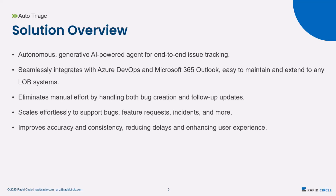This isn't just about bugs or issues. The same approach or principle can be applied for feature requests, incident management, and many other use cases in typical product ALM. The biggest impact, as you can already guess, is that it removes repetitive manual work, ensures accuracy and consistency, and scales extremely effortlessly. In short, auto-triage AI enables teams to focus on solving problems instead of spending energy and time managing different tickets they receive.